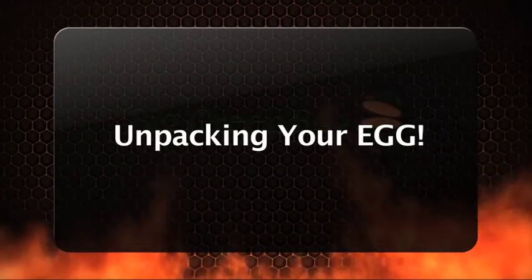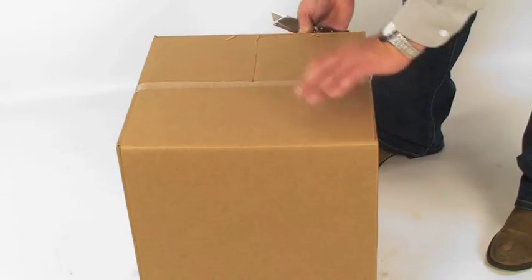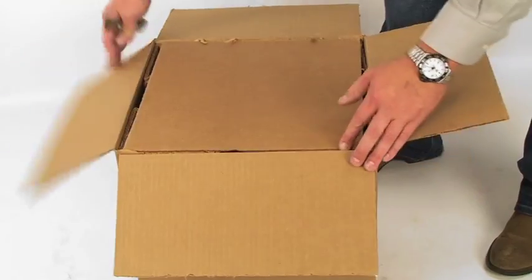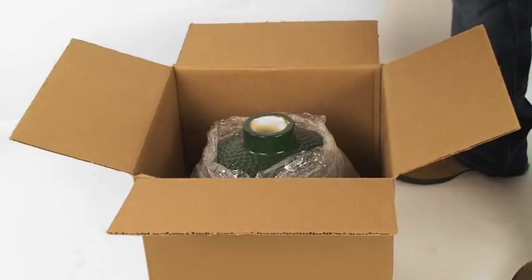Unpacking your egg. To unpack, first cut the tape on the larger box with a pair of scissors or utility knife. Open the box flap and remove all cardboard spacers. Now carefully remove all the components and place them on the ground around you.